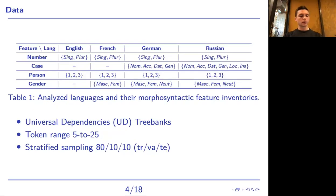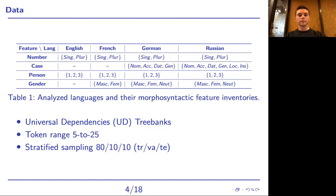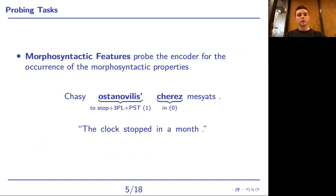We now describe the data used for the probing tasks. For the data, we use sentences from the Universal Dependencies treebanks and applied a set of manually defined linguistic rules to consider the specifics of each language. Note that our methods can be extended to other languages. The first group of tasks probes the encoder for the presence of a particular morphosyntactic feature in the target word.